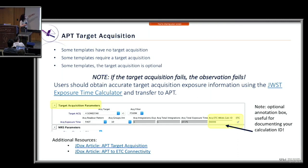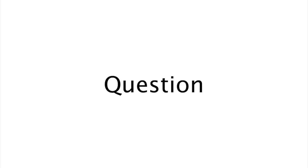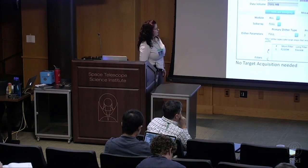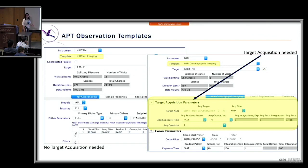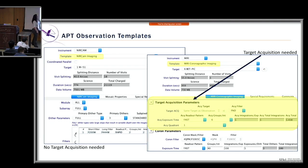Here are examples: a NIRCam imaging template does not need target acquisition — no target acquisition parameters appear. To the right, a MIRI coronagraphic imaging template does need target acquisition, so the target acquisition parameters are now visible and available for that information to be entered.